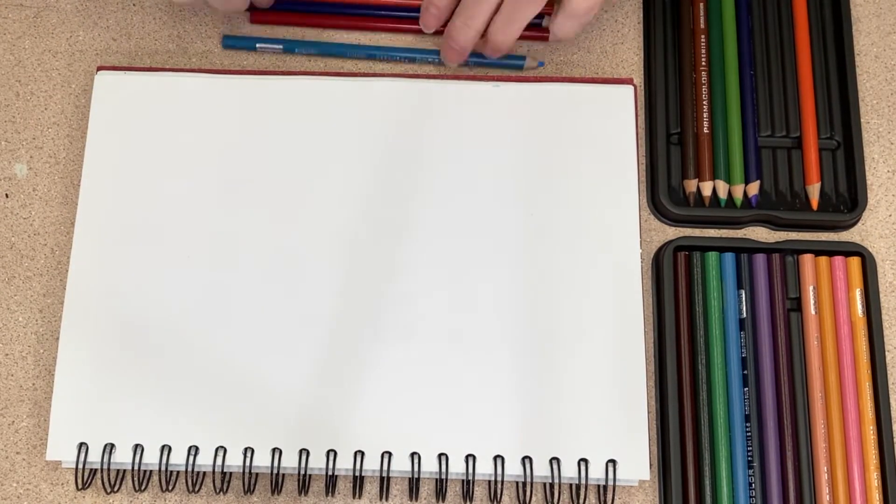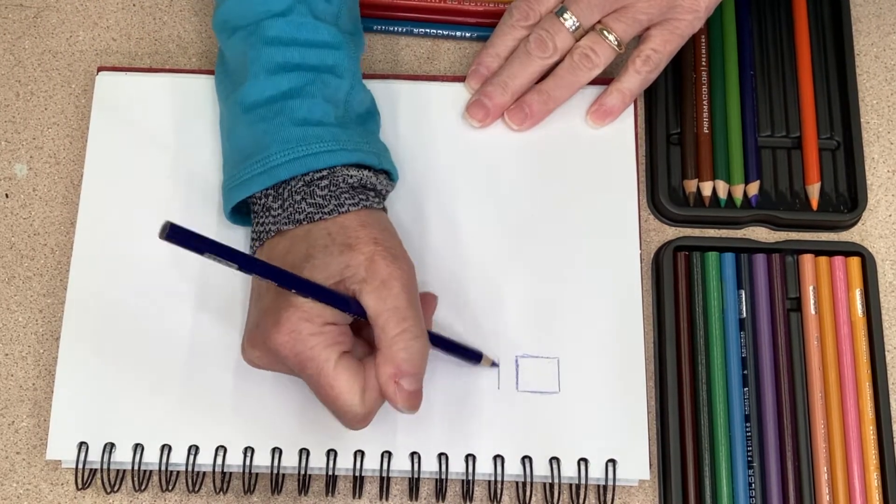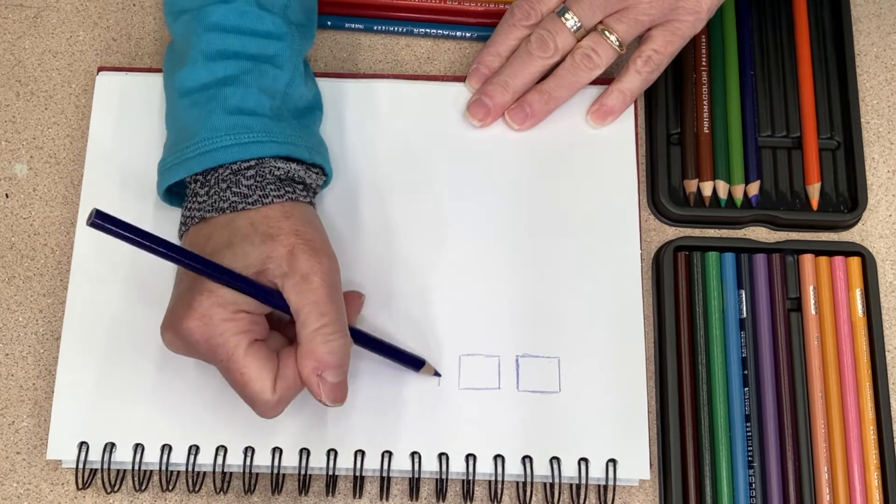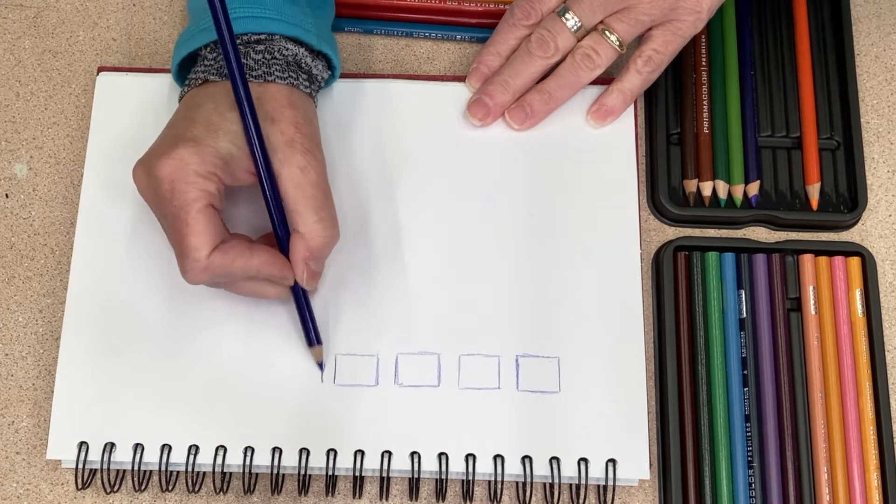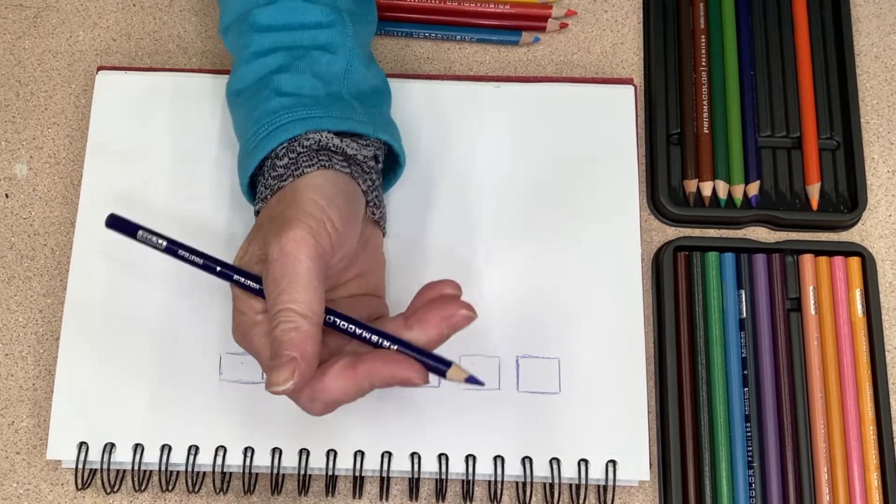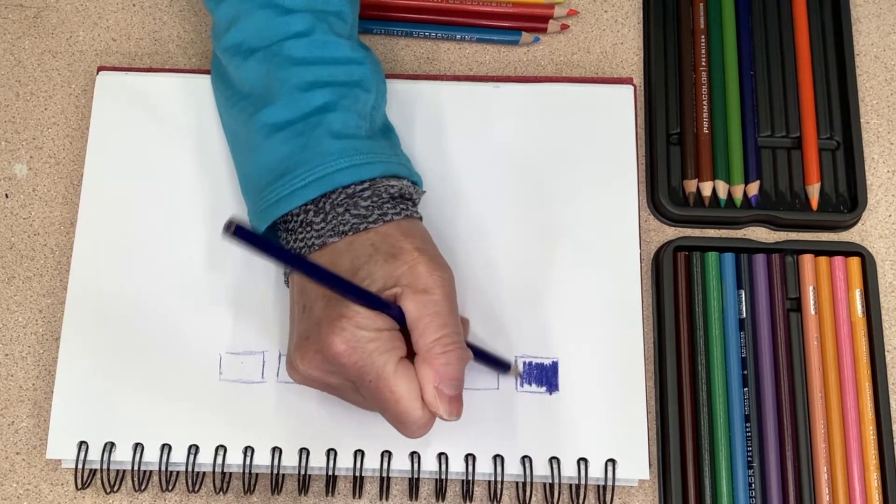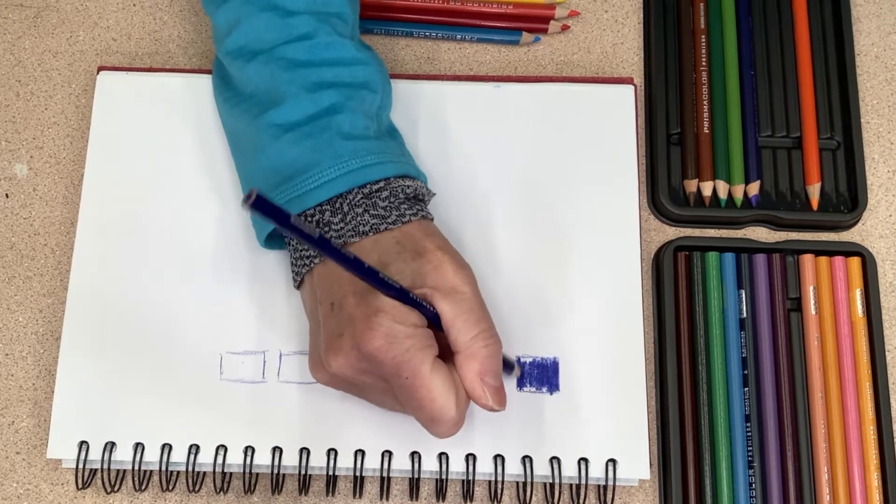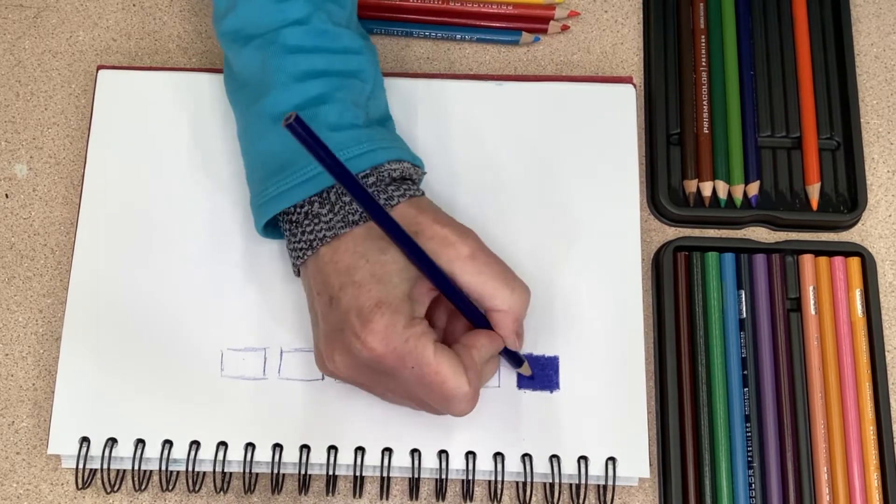I will be creating some boxes just to show you how many different values you can get with just one colored pencil. Here I'm using the indigo blue. And with the first box, I'm going to use quite a bit of pressure to create a nice, deep, dark color.